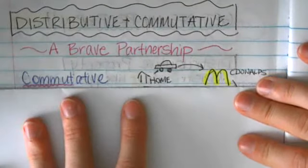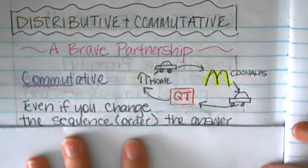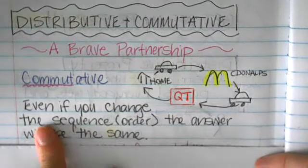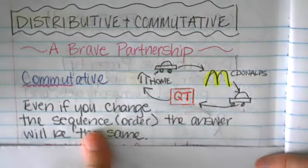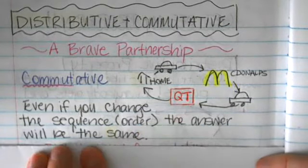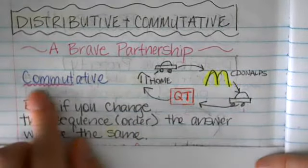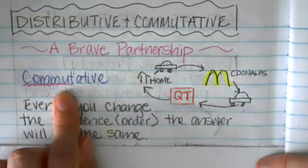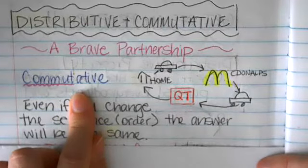We're first going to talk about what the commutative property is. The commutative property means that you can change the sequence or the order of the numbers that you're using, and the answer will still be the same. The important part of the word commutative is the word commute. To commute means to go back and forth between places.